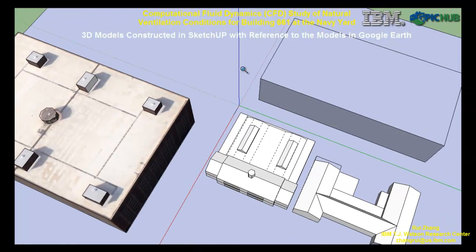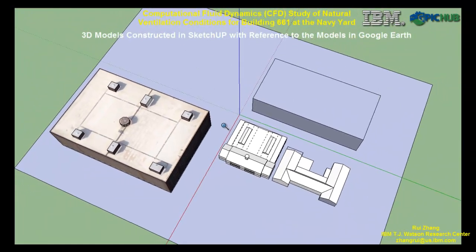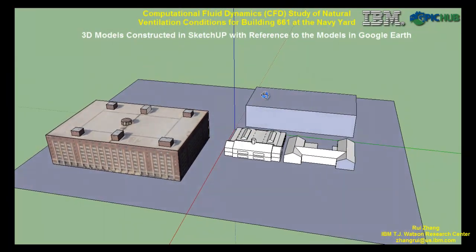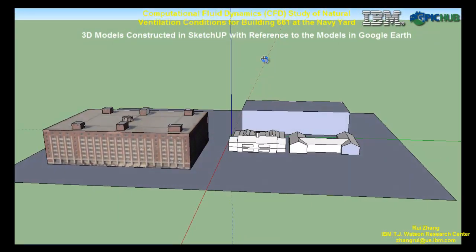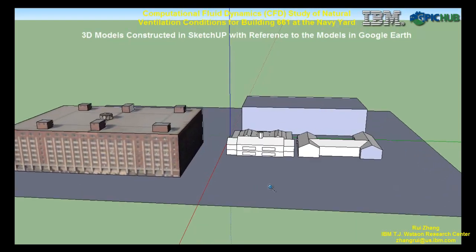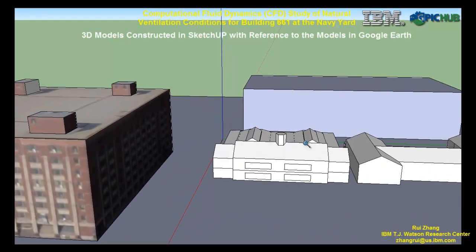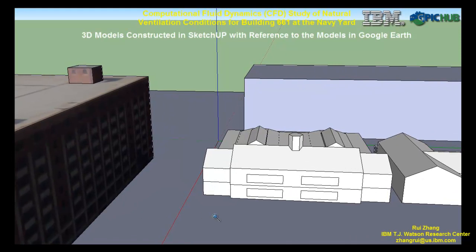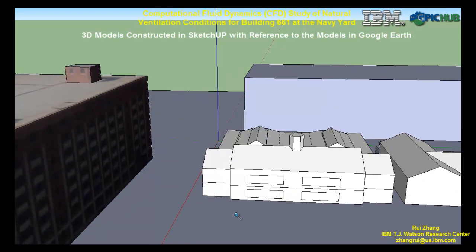The models in Google Earth were downloaded and used as reference to construct the watertight geometry models for conducting the CFD simulation. Simple windows were added, and the internal space is partitioned into five large zones connected with doors.